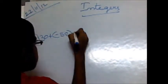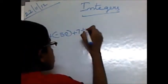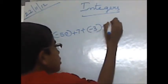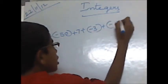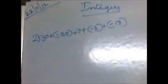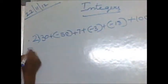The second problem is: plus 7 plus minus 7 plus minus 3 plus minus 18 plus 100. Now this addition.